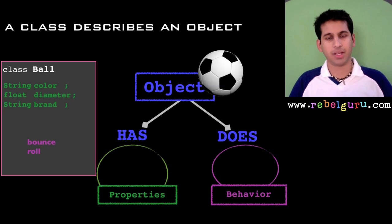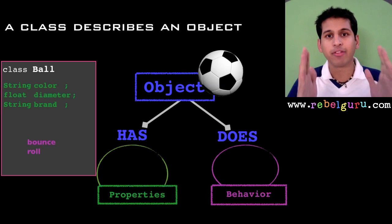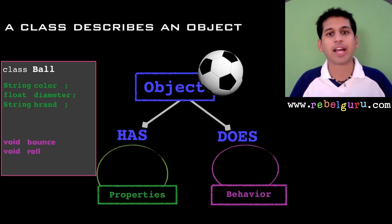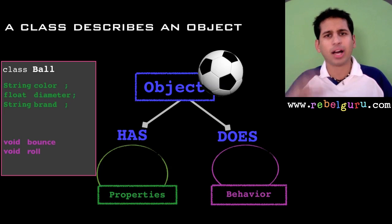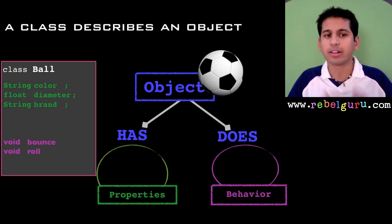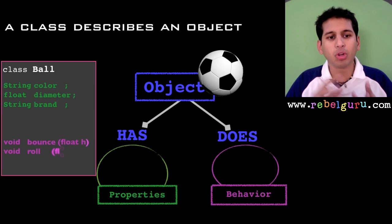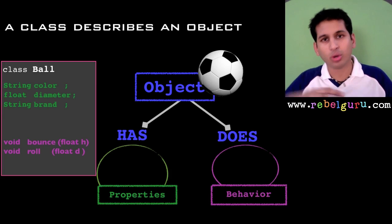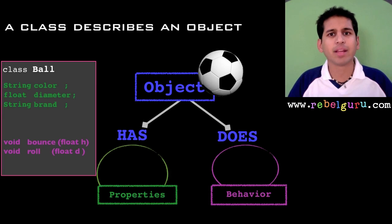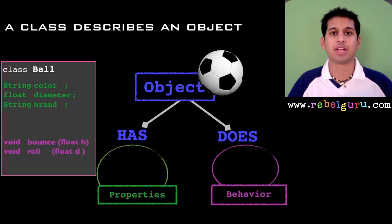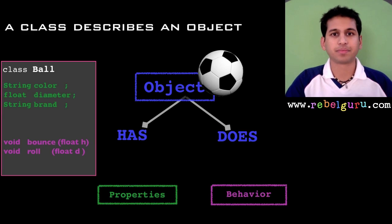So you've translated your English properties into Java properties. Next you take your behavior and translate it into a method. Methods expose behavior of an object - this is a really important concept. Methods require a return type. Both bounce and roll are making the ball do something but not returning anything, so the return type is void. Both bounce and roll need to know something, right? Bounce needs to know how high to bounce, roll needs to know how far to roll, so we're going to give them parameters: float height, float distance.